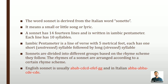Sonnets are divided into different groups based on the rhyme schemes they follow. The English sonnet rhyme scheme is usually a b a b c d c d e f e f g g, while the Italian rhyme scheme is a b b a a b b a c d e c d e. There is a vast difference between the English and Italian rhyme schemes.